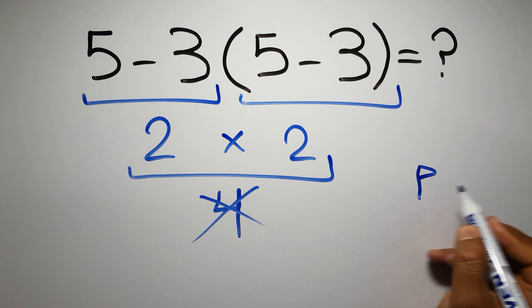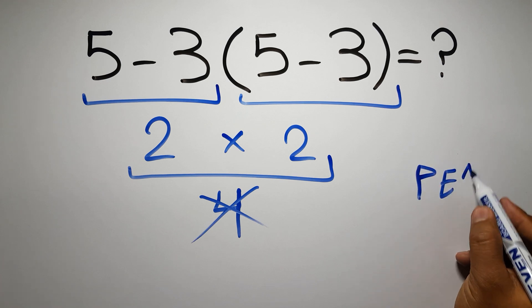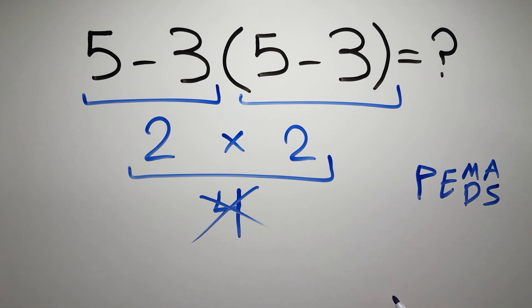According to the order of operations, first we have to do parentheses, then exponents, then multiplication or division, and finally addition or subtraction. Remember that multiplication and division have equal priority, and we have to work from left to right, and the same applies to addition and subtraction.